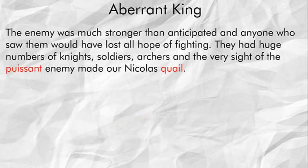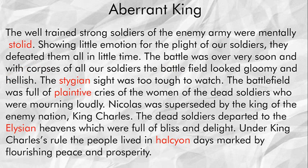The enemy was much stronger than anticipated, and anyone who saw them would have lost all hope of fighting. They had a huge number of knights, soldiers and archers, and the very sight of the poesant enemy made Nicholas quell. Poesant means powerful and quell means to feel afraid. The well-trained, strong soldiers of the enemy army were mentally stolid, showing little emotion for the plight of our soldiers. Stolid means showing little or no emotion.